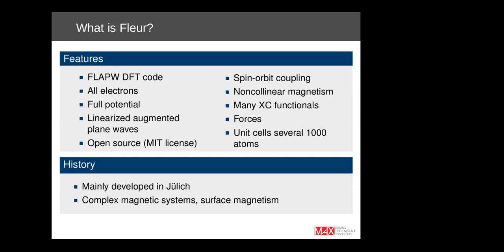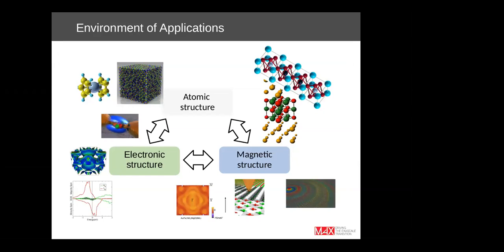Historically, the code is mainly developed in Jülich and was strongly used to describe complex magnetic systems and surface magnetism. But in general, we have a broader environment of application. We are interested in the interplay between atomic structure, electronic structure, and magnetic structure. For example, multiferroics is also a big topic for us and for users of the code in general.